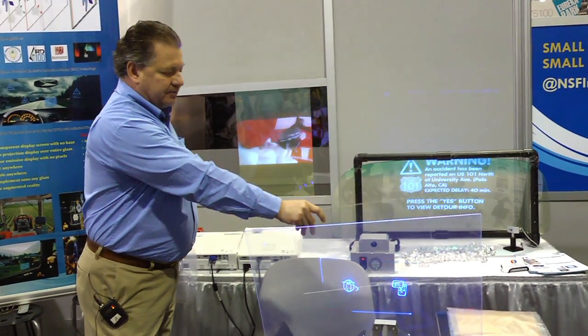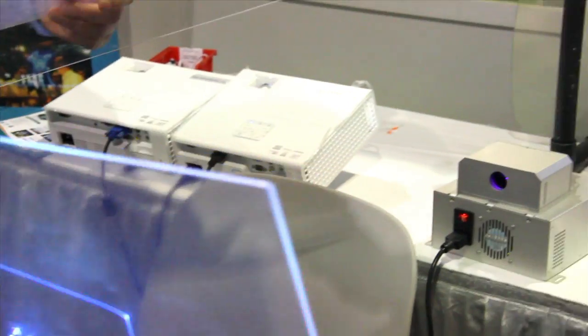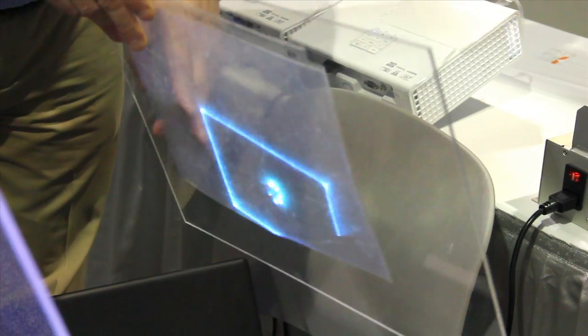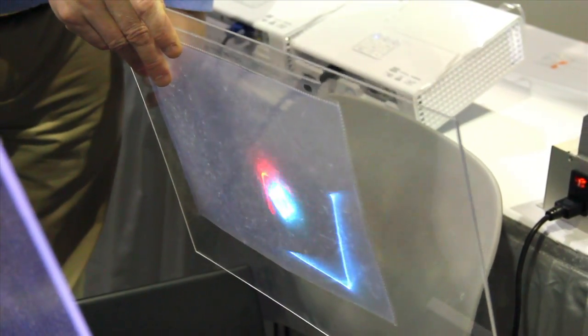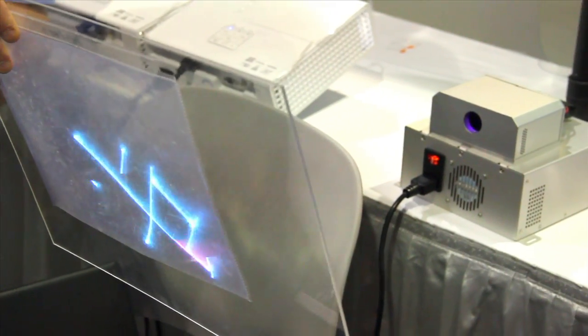If you have a piece of glass that you want to put your display on and you put it in front of the projector, you don't see anything. But once you put it on there and you have the film, the patented film on it, it will display anywhere that you have the glass, the acrylic or the film.